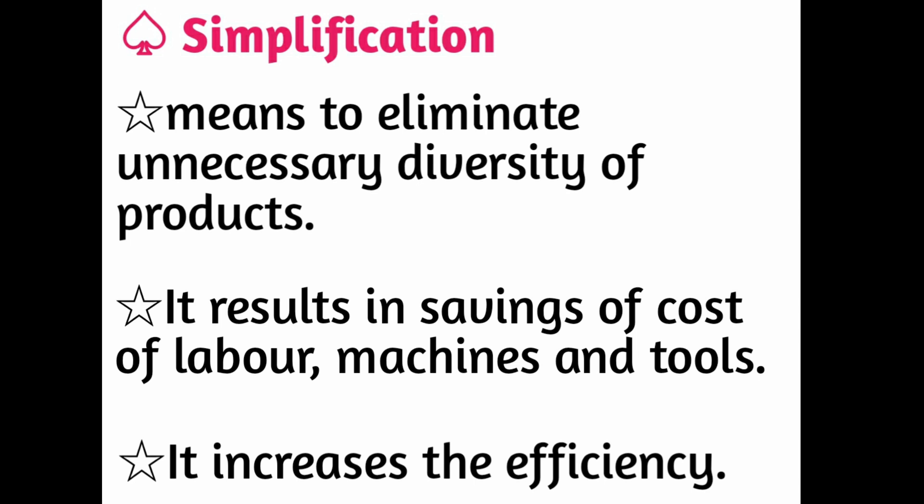यानि 1800 types के paper जो unnecessary थे, उनको reduce कर दिया। उन 1800 types में जो raw material, machinery और labor use हो रहा था, उसकी cost बच गई। इसी तरह एक shoe बनाने वाली company का example — वो 4 number का size बनाती है, फिर 5 का, 4.5 इसलिए नहीं बनाती क्योंकि 4 और 5 number के बीच का 4.5 इतना minute difference है कि company ने उस unnecessary diversity को eliminate किया। अगर company 4.5 भी बनाती तो extra raw material, machine और labor की wastage होती। So unnecessary diversity को eliminate करने से the cost of production will be reduced.